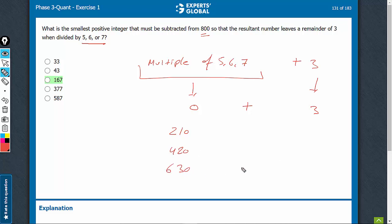The next one, 630 plus 3, 633. The next multiple would be above 800.